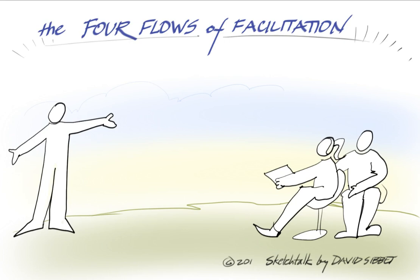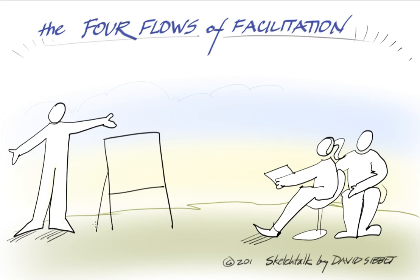Cartoonists have figured out that everybody who's real actually does have their feet on the ground, and they figured out that through shadowing and other things you can illustrate that. They also know that physical objects, 3D objects, can be illustrated very simply. And this whole three-dimensional level of the four flows is what we call the operations level.